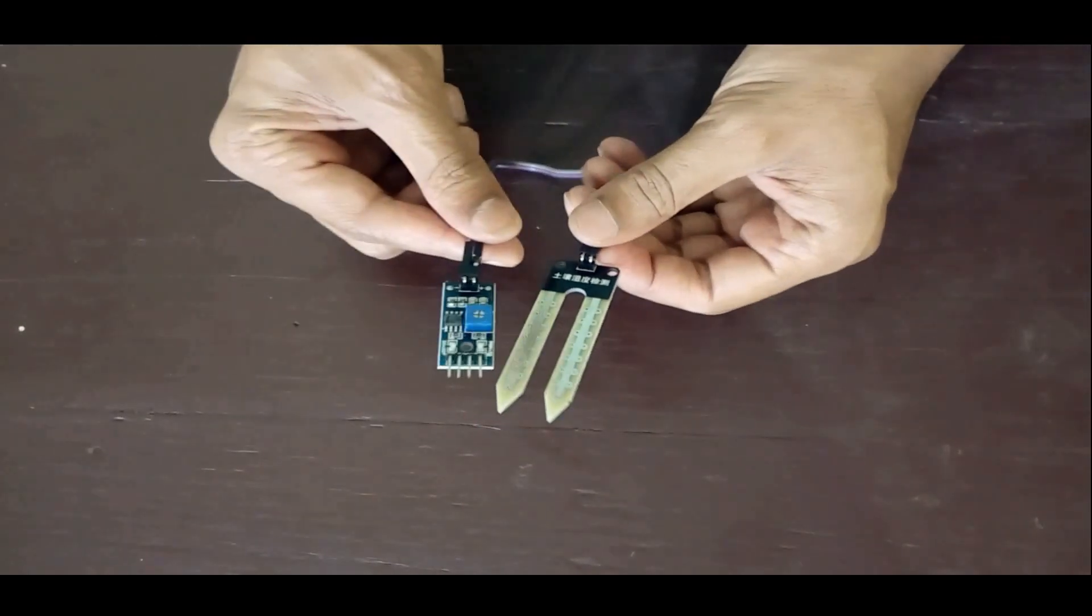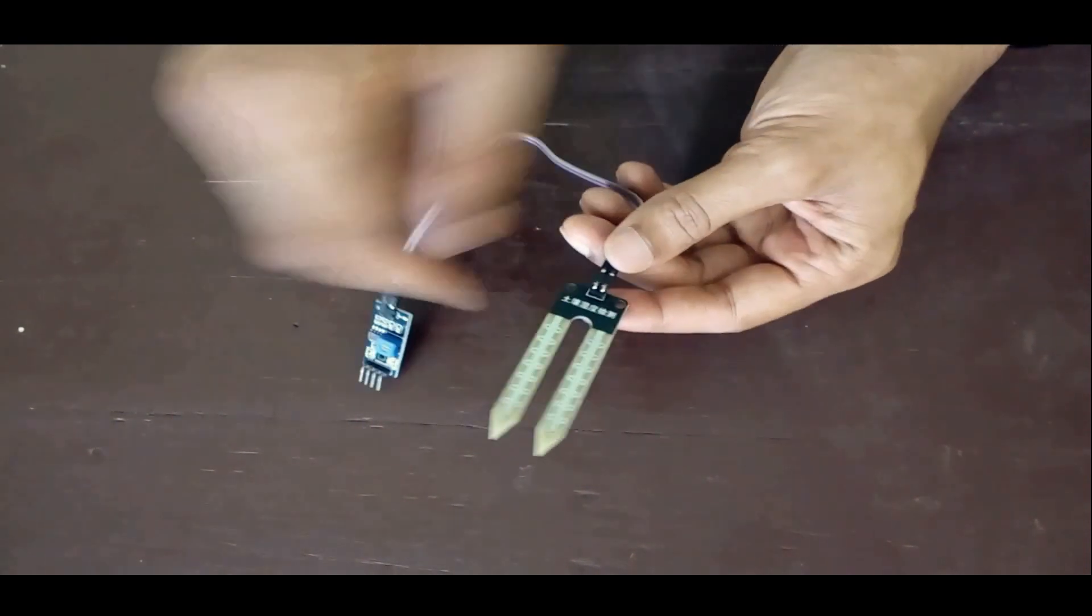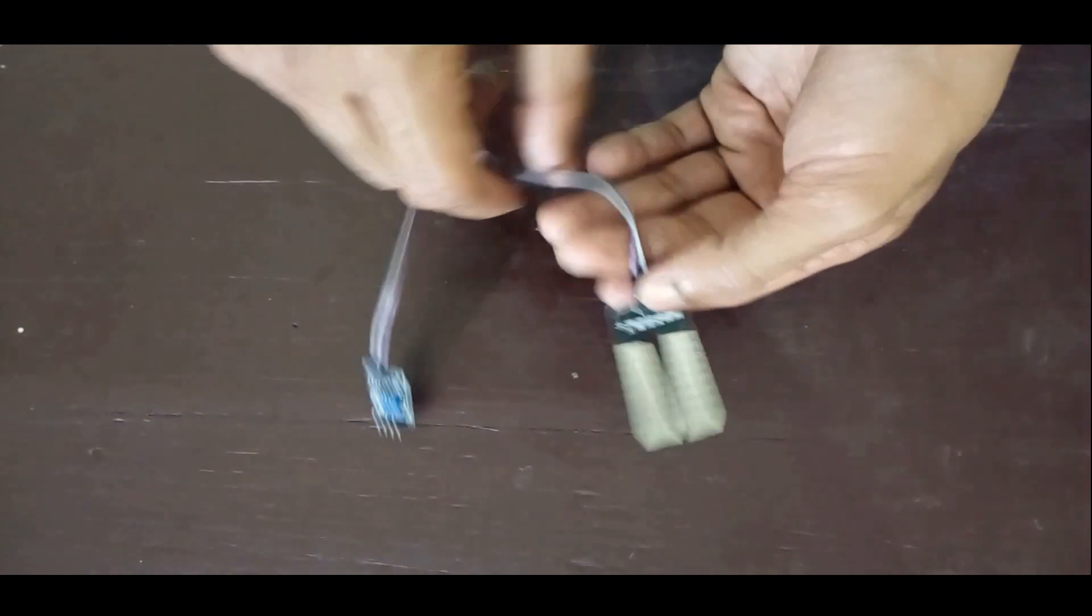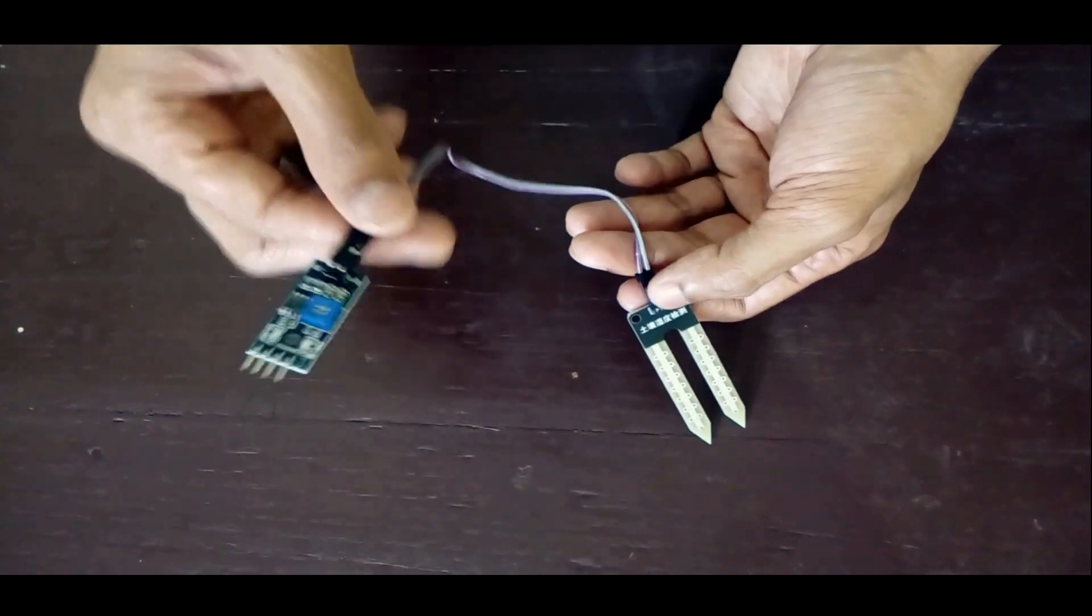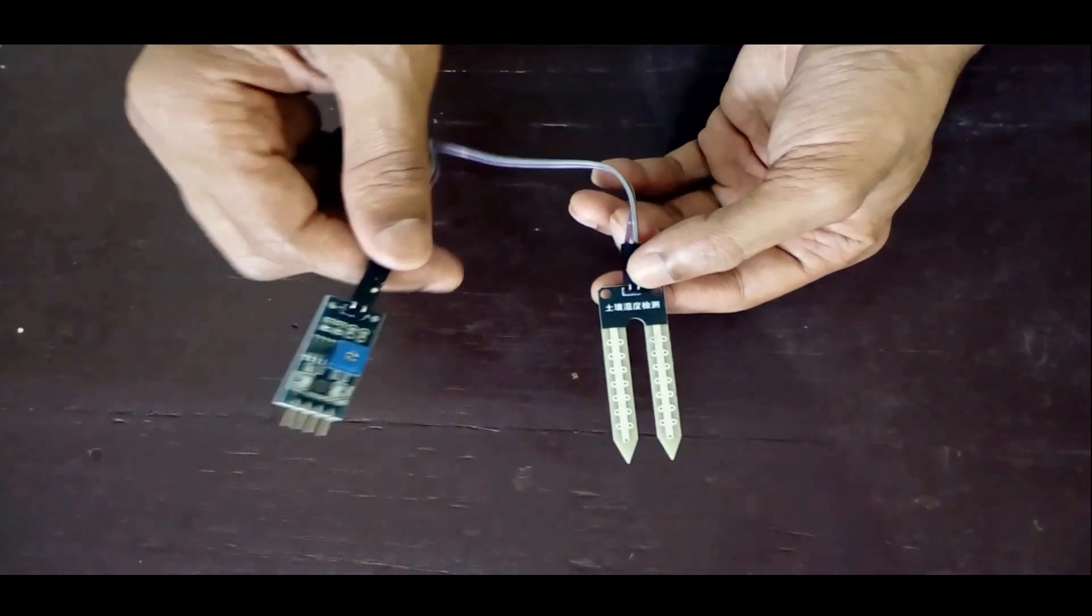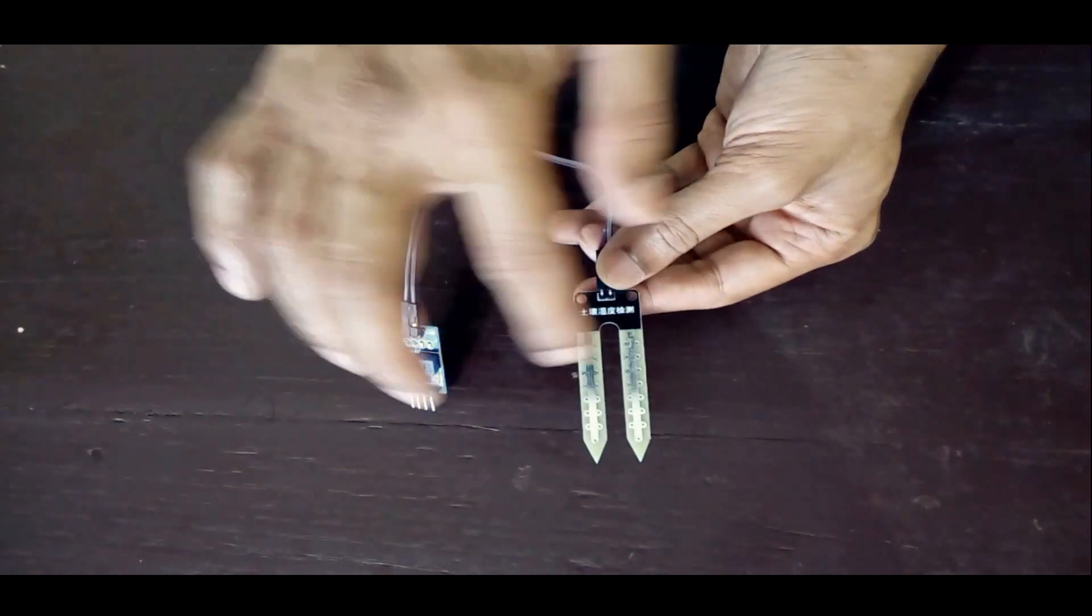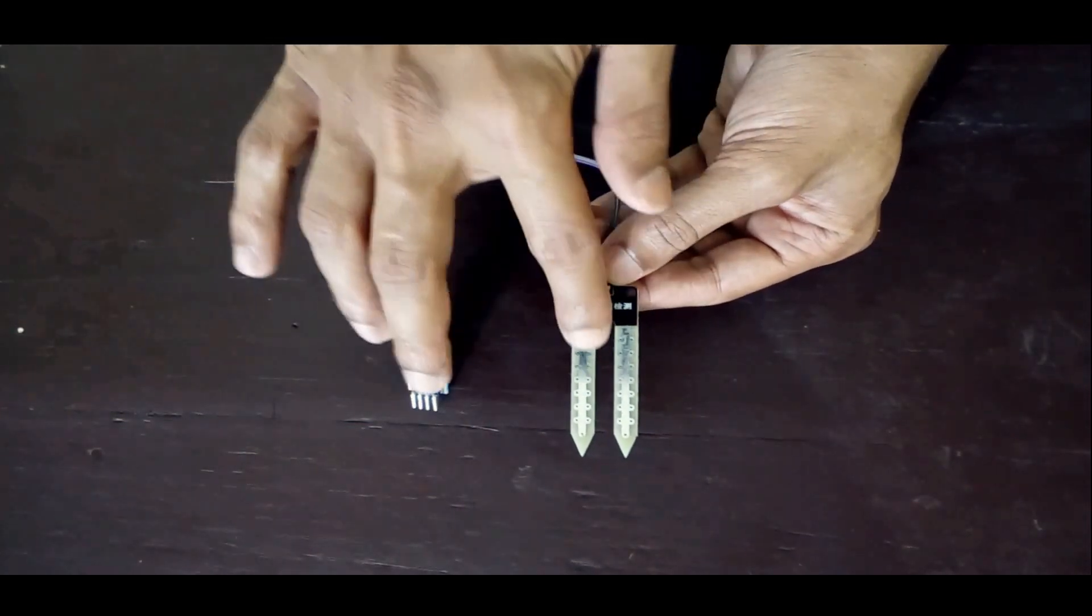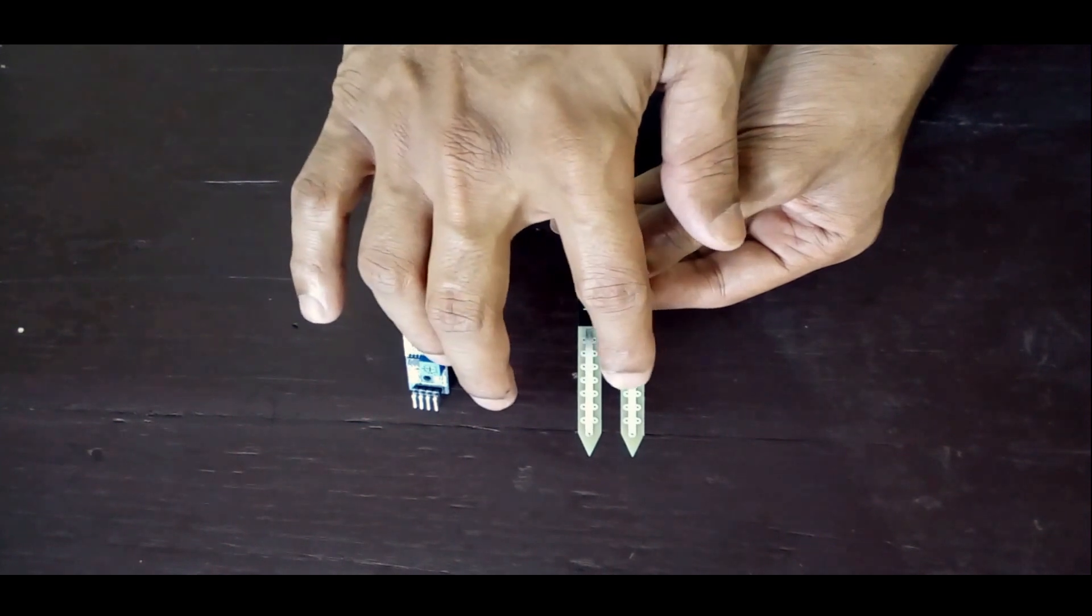We need to implant this probe into the soil that we need to check the water content. We need to implant in such a way that these silver lines get completely disappeared from our eyesight, so that they will measure the water content in soil accurately.